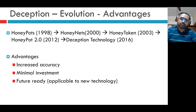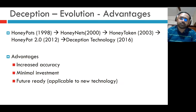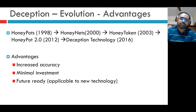Honeypot 2.0 was introduced in the year 2012, and deception technology has continued to evolve. The advantages of deception are increased accuracy, minimal investment, and it is future ready.